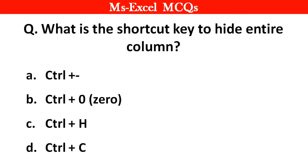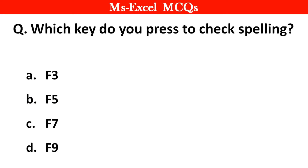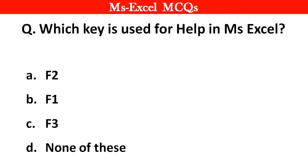Next question. What is the shortcut key to hide an entire column? The right answer is option B. Next question. Which key do you press to check spelling? The right answer is option C: F7. Next question. Which key is used for help in MS Excel? The right answer is option B: F1.